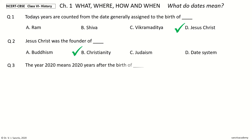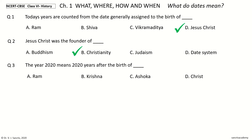Question 3. The year 2020 means 2020 years after the birth of — your options: Ram, Krishna, Ashoka, Christ. And the answer is Christ.